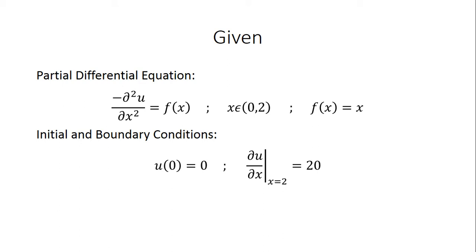We also know that x goes from 0 to 2. We are given our initial and boundary conditions. Our initial condition is u(0) = 0, meaning the displacement at x = 0 is zero, so we're fixing one end. Our boundary condition is the partial derivative of u with respect to x at x = 2 equals 20, meaning at x = 2 we have a force of 20 on that node.